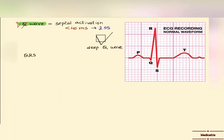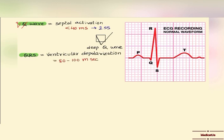Now about the QRS complex — this represents ventricular depolarization and it is between 80 to 100 milliseconds, meaning it will be between 2 to 2.5 small squares. In this complex also, the Q will be small.